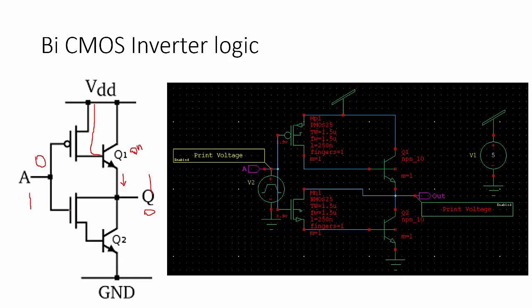When input A is 0, the NMOS and Q2 transistor will be in the off condition. When you are giving A equal to 1, the PMOS transistor will be in off state, the NMOS will be in the on condition. The input signal will be passed, transistor Q2 will be on, so output will be directly connected to ground — we are getting 0. This is the operation of the BiCMOS inverter.